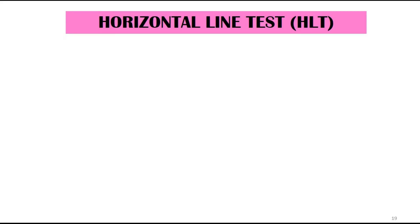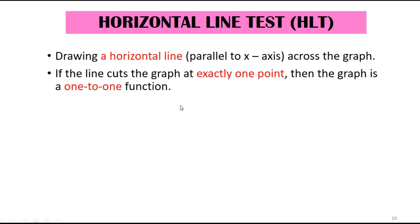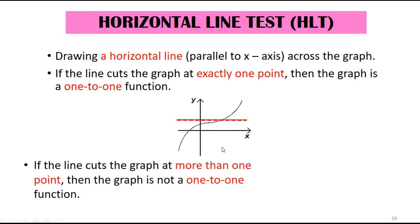If the vertical line test is used to determine a function, now let's look at the horizontal line test. The horizontal line test involves drawing a horizontal line across the graph. If the line cuts the graph at exactly one point, then the graph is a one-to-one function.